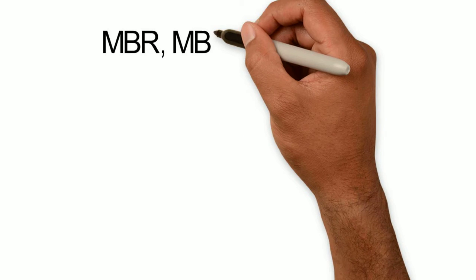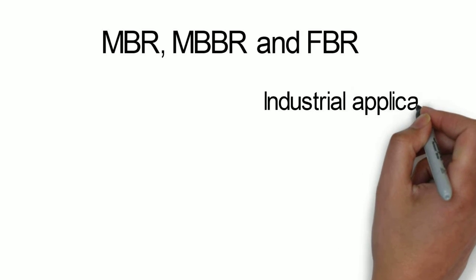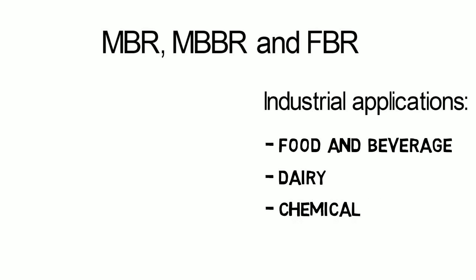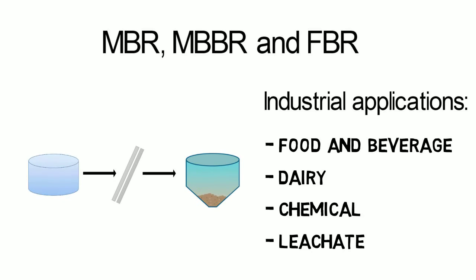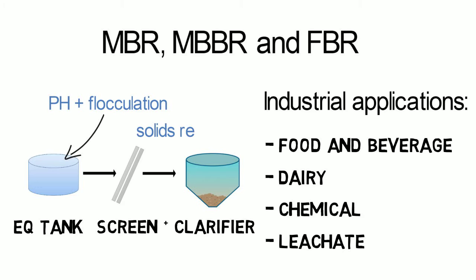MBR, MBBR, and FBR are widely used technologies in wastewater treatment, especially for industrial applications with high BOD loading such as food and beverages, dairy, chemical, leachate, and others. As industrial applications usually have volatile water inflows, equalization tanks are used for water storage and eventually pH neutralization, as well as flocculation. Afterwards, screens and sometimes clarifiers are used to remove a good number of solids.